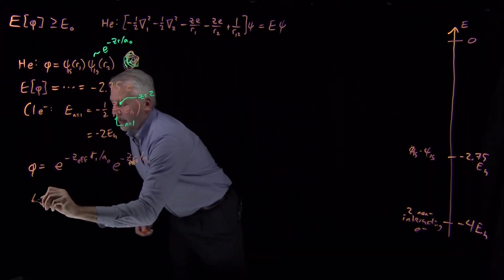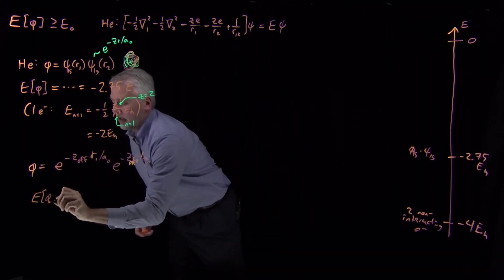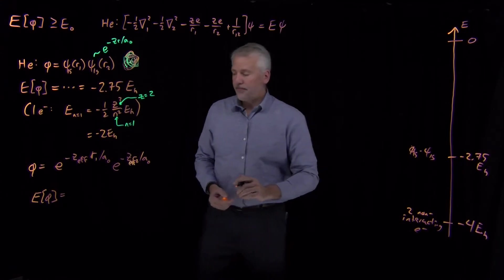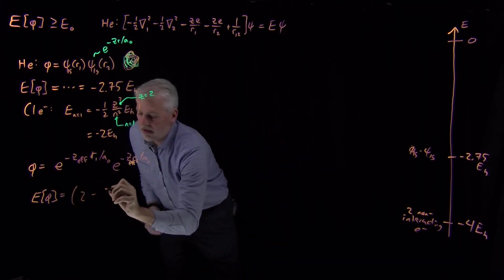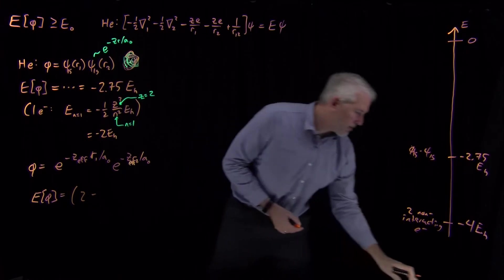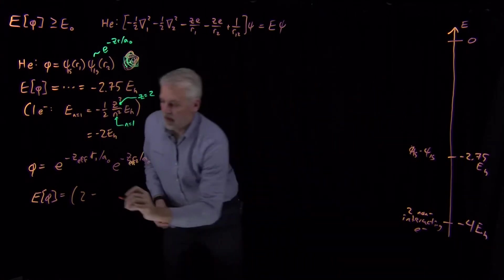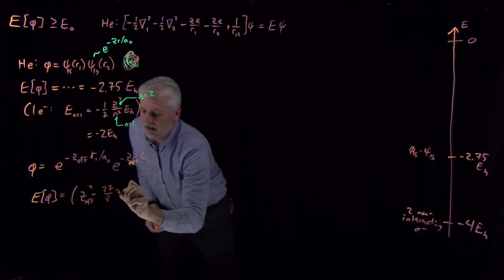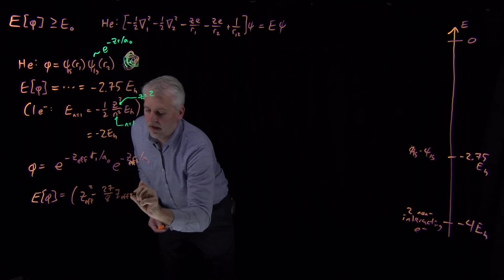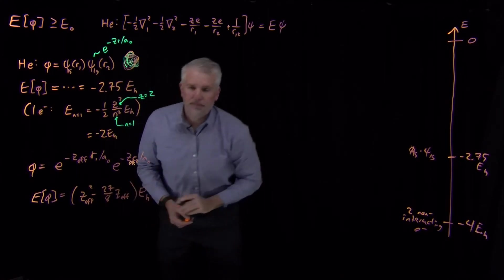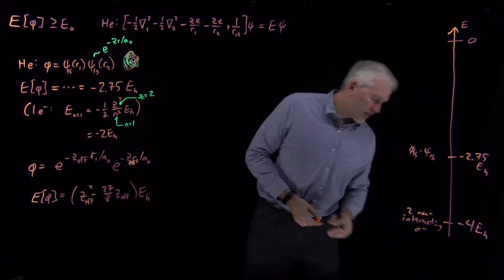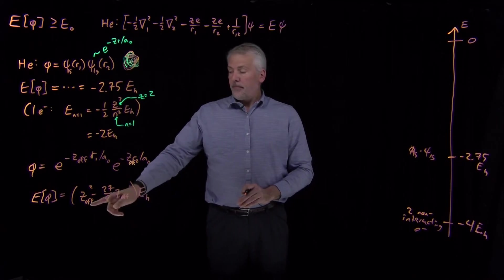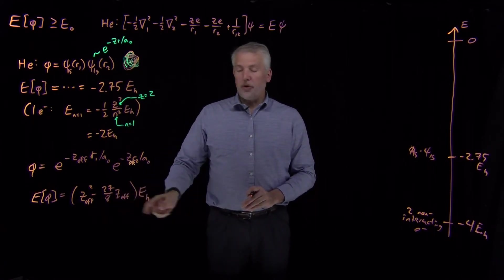I can evaluate the variational energy for this wave function. And what I find is z effective squared minus 27 eighths of z effective times a Hartree. So that's what I get for the energy of the variational function, the trial wave function if I allow the nuclear charge to change.